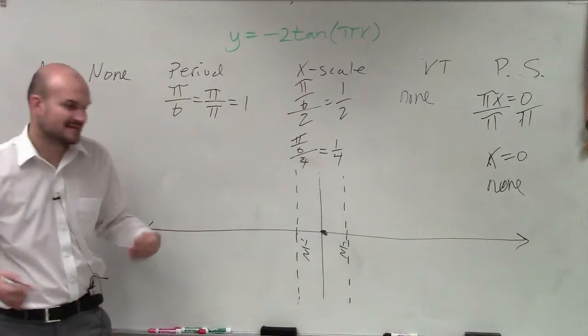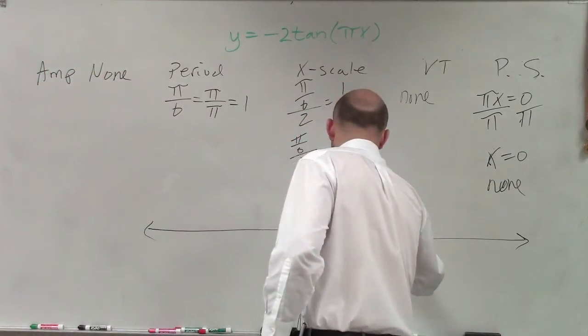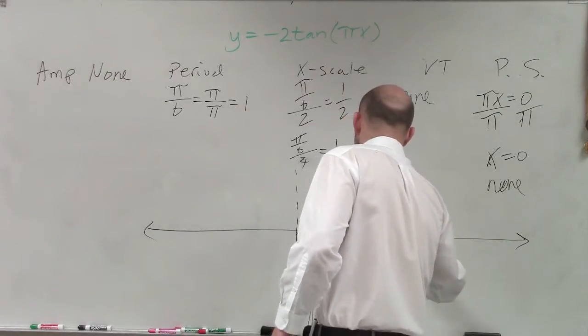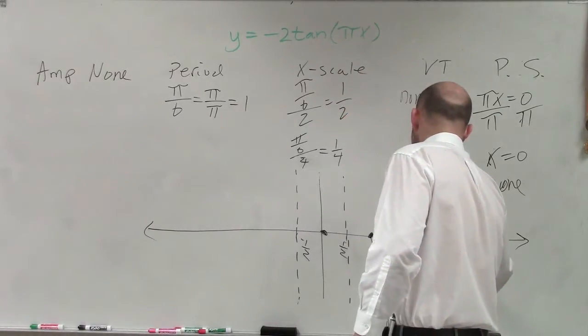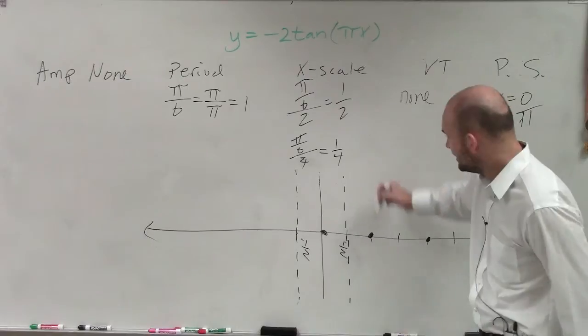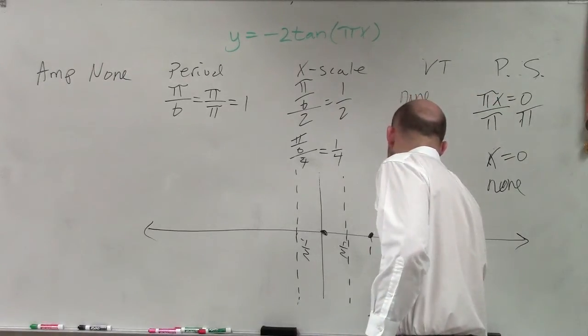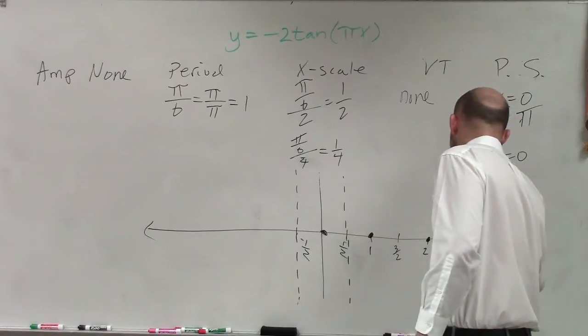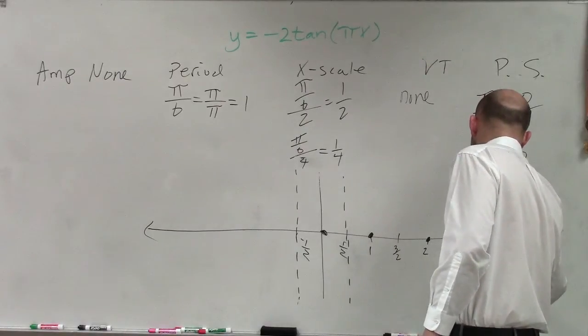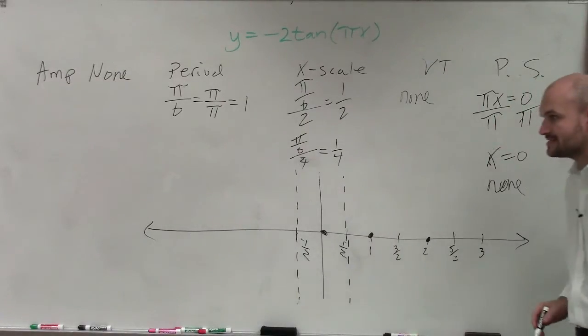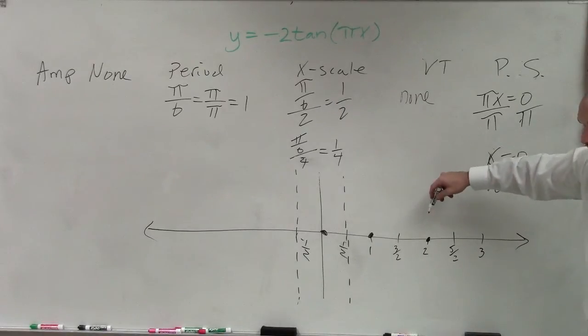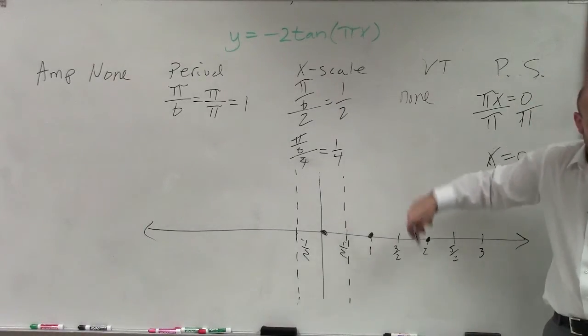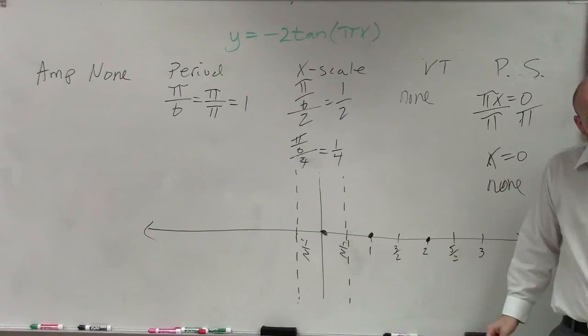So do you guys see how my x scale? Well, every scale, that's the next x-intercept, the next asymptote, next x-intercept, next asymptote. Each one of these is going to be 1 half away from each other. That's how I use the x scale.